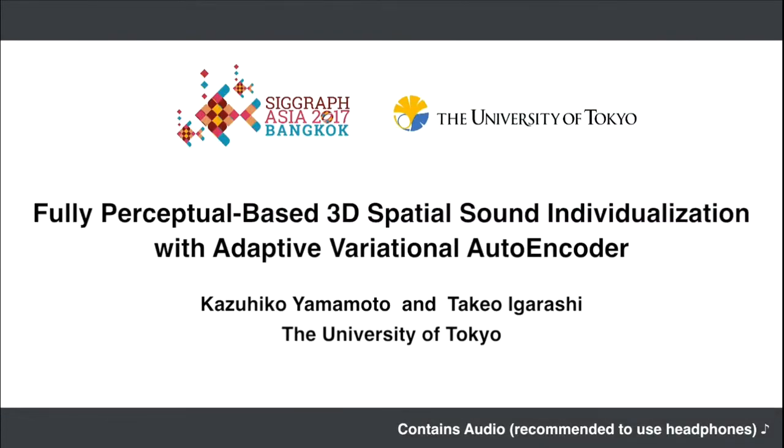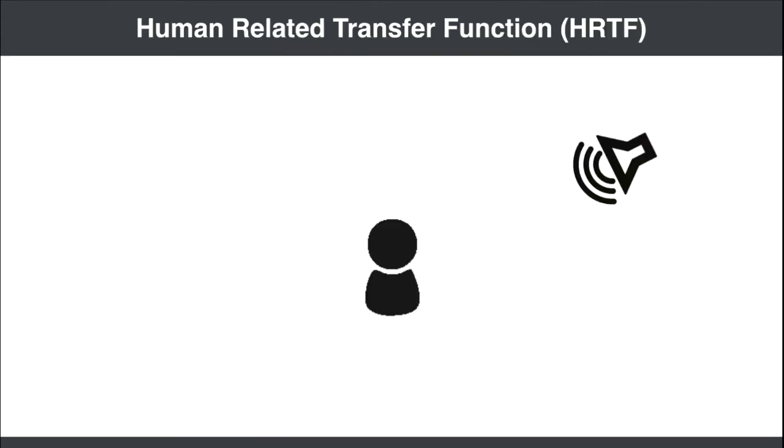Fully perceptual based 3D spatial sound and eye visualization with an adaptive variational auto-encoder. We perceive the directions of incoming sounds using both ears with direction-dependent sound modifications.